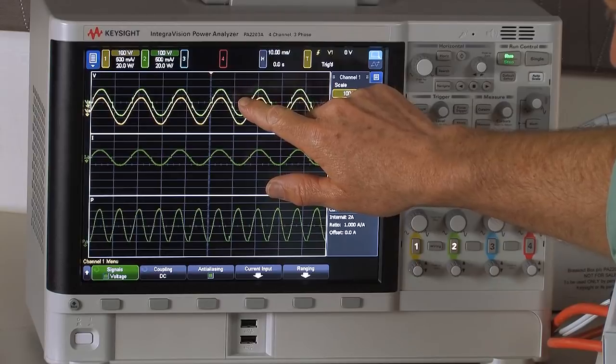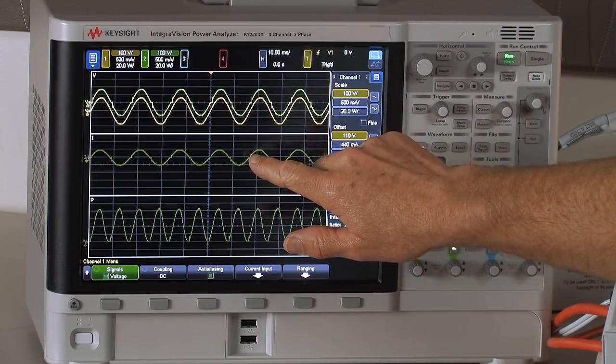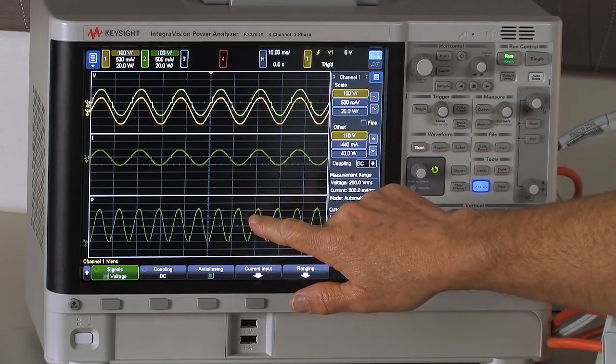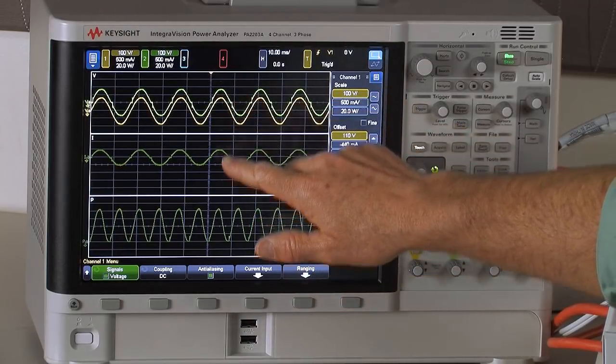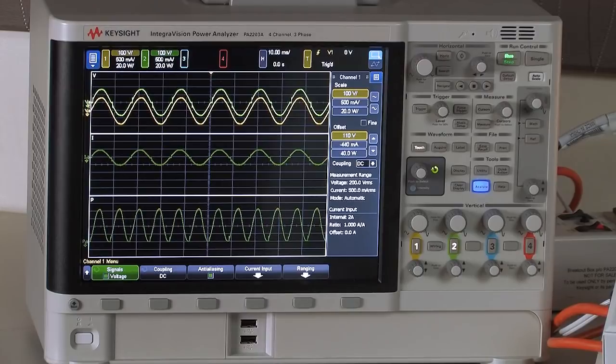We have our voltage waveform, our current waveform, and our power waveform at the bottom. The incandescent bulb is basically a resistor so all the signals look very similar.